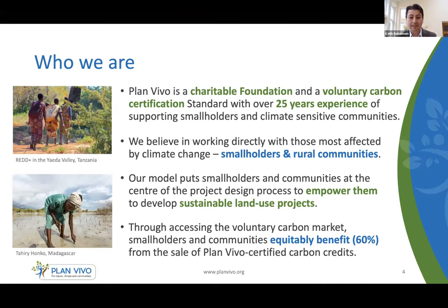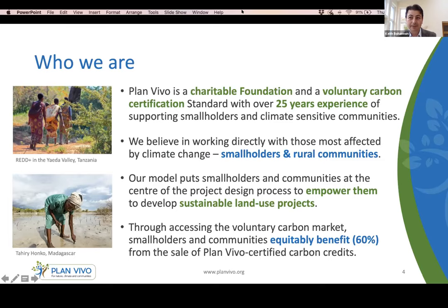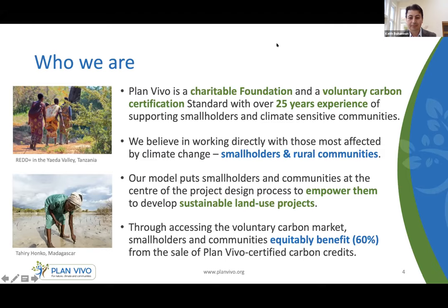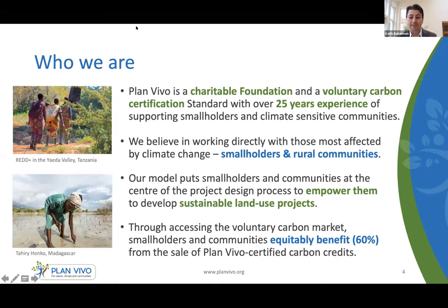We're a charitable foundation based in Edinburgh and we run and administer the Plan Vivo standard, which is a voluntary carbon standard. We've been working for over 25 years with smallholders and communities across the world on sustainable land use projects. Our model really puts smallholders and communities at the centre of the project design process, because we believe that to have the best impact on climate change, we need to work directly with those people most affected. A key component of our model is that through accessing the voluntary carbon markets, at least 60% of the finance goes back to the communities on the ground.